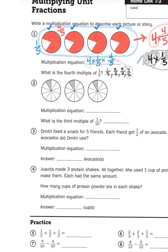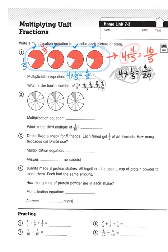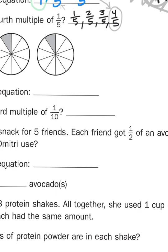So, when you take a look at these next three problems, you need to be thinking about what is the fraction I'm multiplying, and what is the whole number factor I'm multiplying it by? And again, I'm only going to be looking at the numerator. So, for example, in question number three, Dimitri fixed a snack for five friends. Each friend got half of an avocado. How many avocados did Dimitri use?